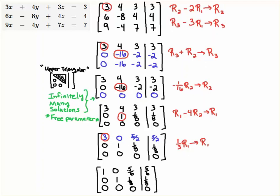So I get a 1, 0, 5/6, 5/6. Now this augmented matrix is in row reduced echelon form, RREF for short.